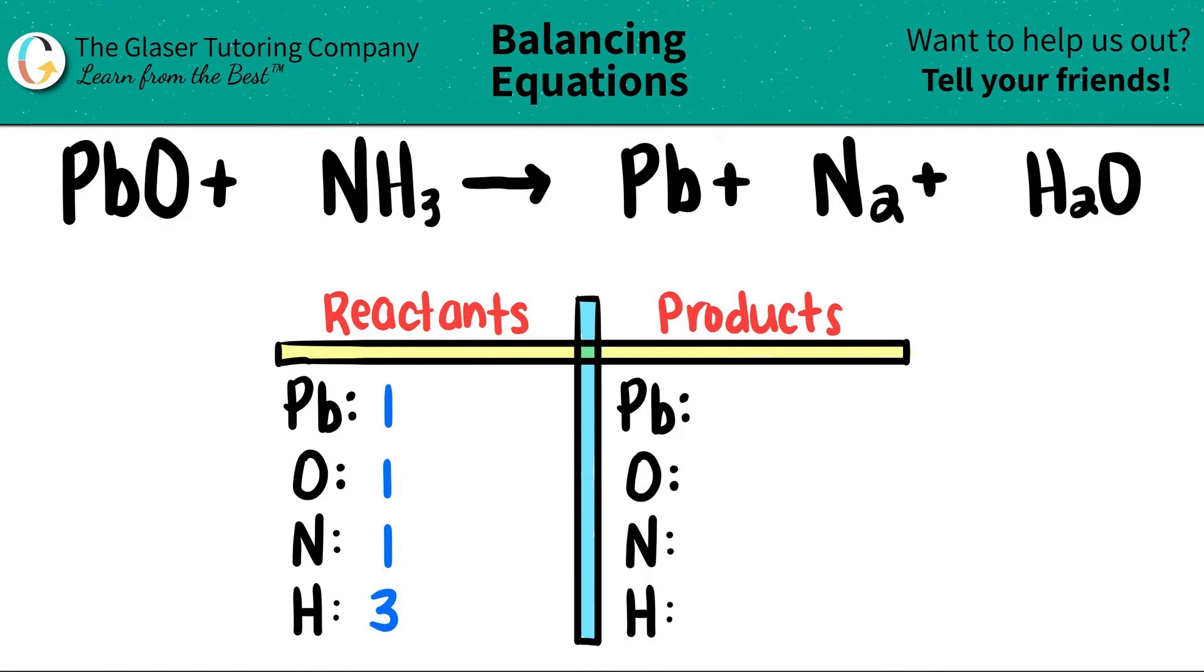Moving on to the product side, I have just one Pb, so one. There's a two next to this nitrogen, so I have two nitrogen. And then for the hydrogen, I see that I have a two here, so that means two hydrogen, but then there's no subscript after the oxygen, so that means there's one.